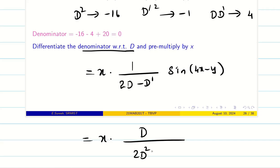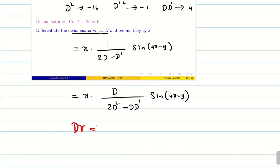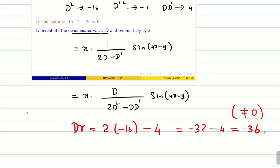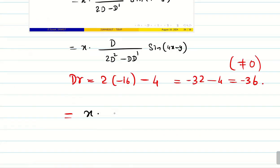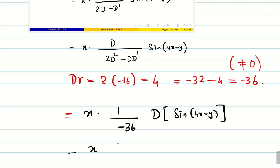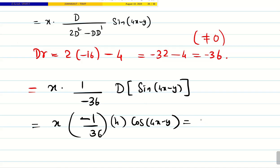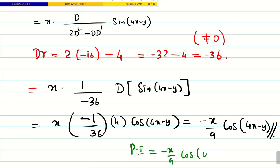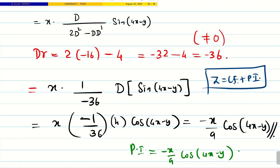We rewrite as: x · D / (2D² - DD') · sin(4x - y). Now the denominator: 2·(-16) - (4) = -32 - 4 = -36, which is non-zero. So PI = x · (1/-36) · d/dx[sin(4x - y)] = x · (1/-36) · 4cos(4x - y) = -x/9 · cos(4x - y). This is the particular integral. The final solution is z = CF + PI.